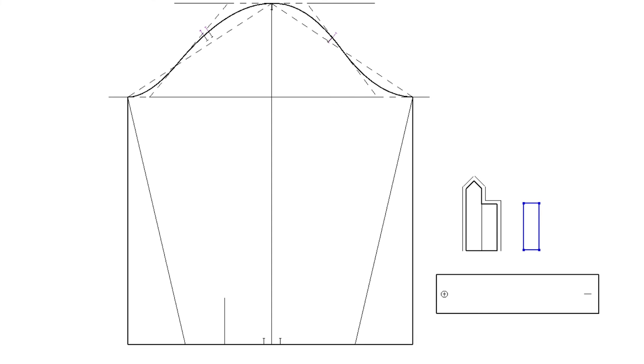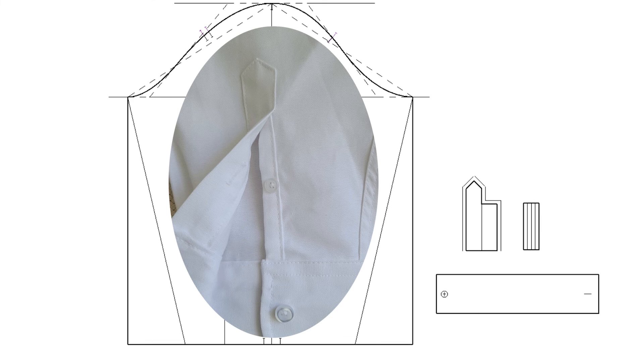For the under placket, draw a simple rectangle: three inches height and one inch width. For this under placket, you need seam allowance only on the bottom. This one inch width already has seam allowance. You will see only a quarter of an inch on the upper side.